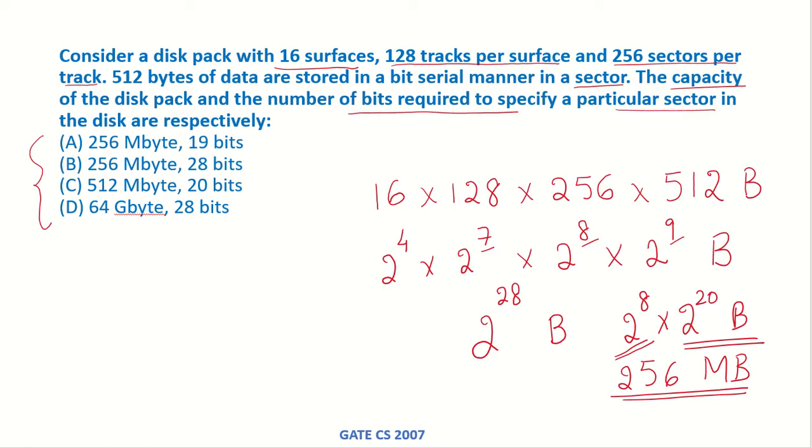So if we have to go to a particular sector we should first know which surface it is on. So there are 16 surfaces. For each surface if we have to put an address to that surface or to access that particular surface, 4 bits will be required to access the surface because 2 to the power of 4 is equal to 16. So 4 bits will be required to address a particular surface.